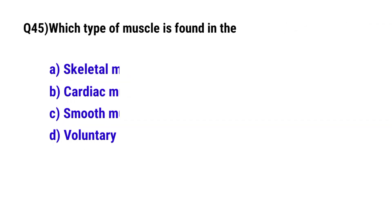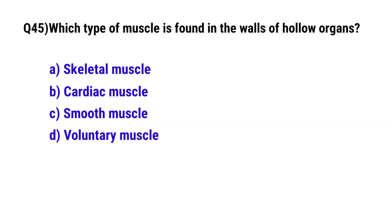Question number forty-five: Which type of muscle is found in the walls of hollow organs. The correct option is C, smooth muscle.